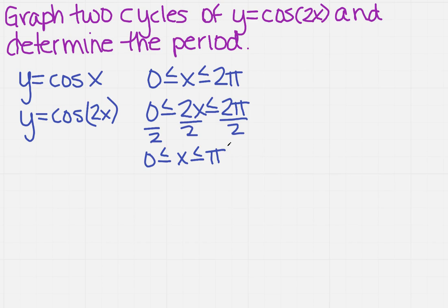So what that tells me is that my cycle is going to be from 0 to π. But this says I need to do two cycles. And if I need to do two cycles, then it's going to go from 0 to 2π.